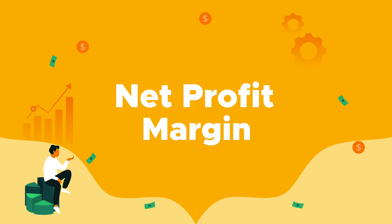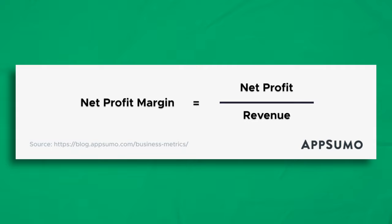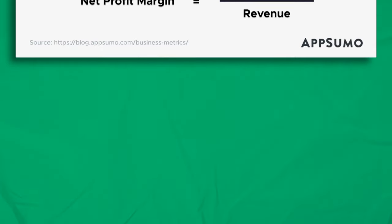Number 9: Net Profit Margin — the metric to measure profitability. To calculate it, first figure out your net income: take the selling price minus marketing fees, labor costs, product development, taxes, and any other deductions. Then divide the result by your revenue and multiply by 100. If you want your business to stay in the game, this is one of the most important metrics for you to track.